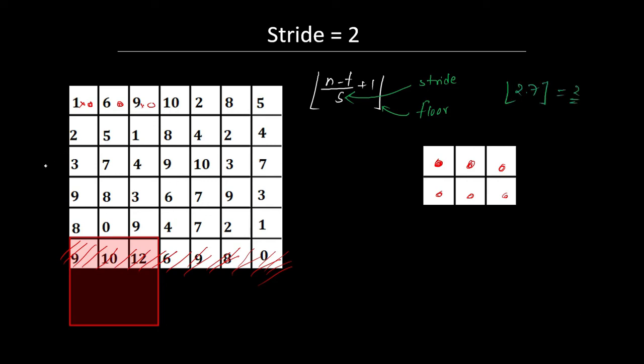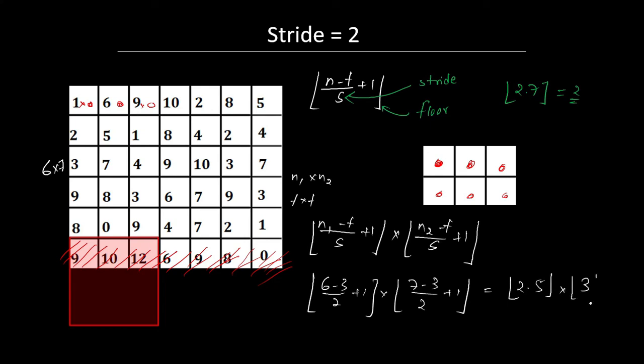In this example, I used an image of size 6x7. If our input image is size n1 x n2 and filter size is f x f, the final image size becomes floor((n1-f)/s + 1) x floor((n2-f)/s + 1). In this example, it's (6-3)/2 + 1 and (7-3)/2 + 1, which equals 2.5 and 3, giving us 2x3.